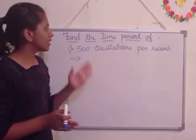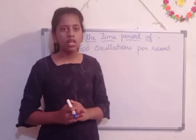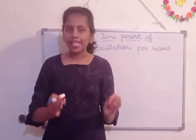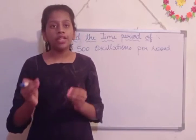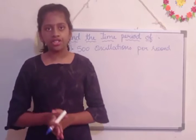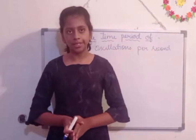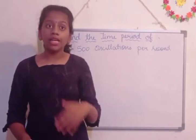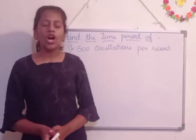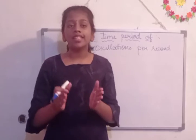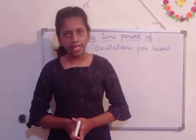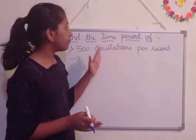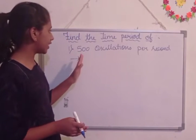So here is the topic: how to find the time period. First, let us know what we mean by time period. Time period means it is the time required to complete one oscillation. Now let us know what we mean by oscillation. Oscillation means it is the to-and-from motion of an object.